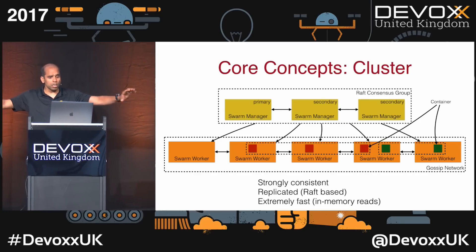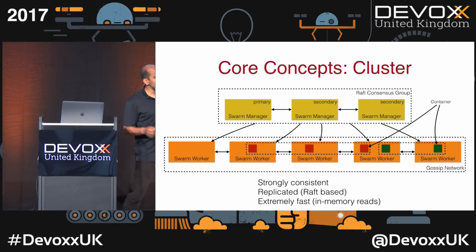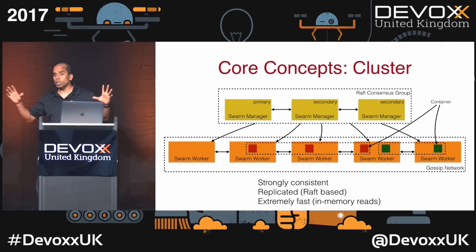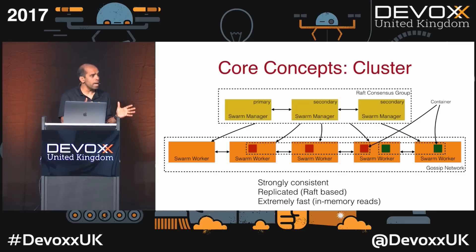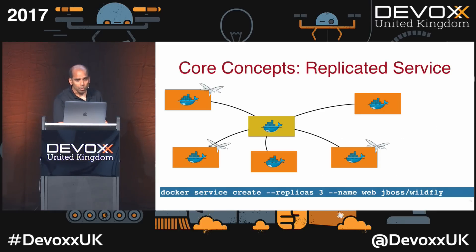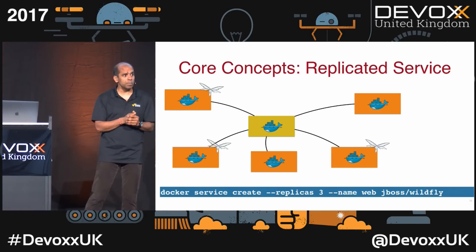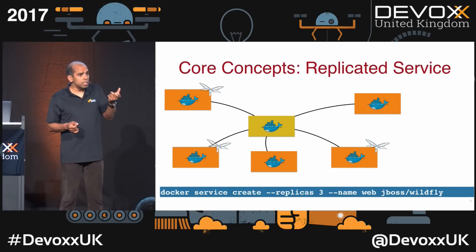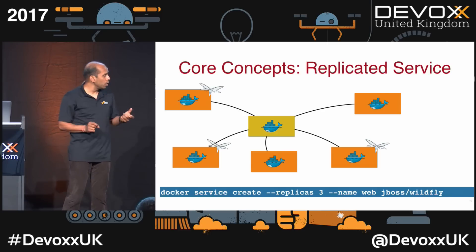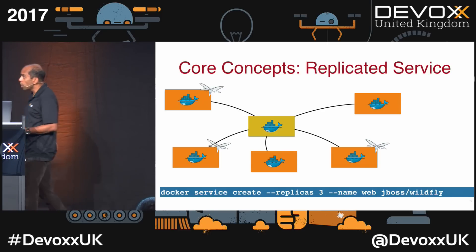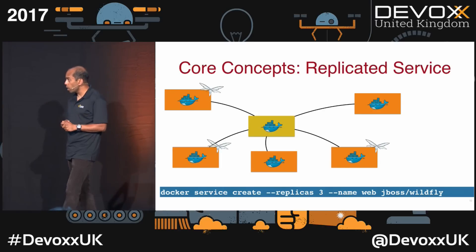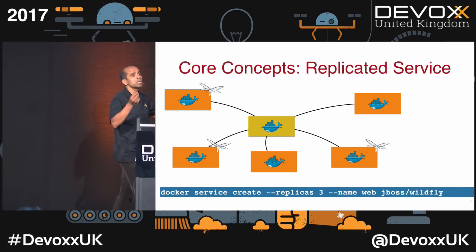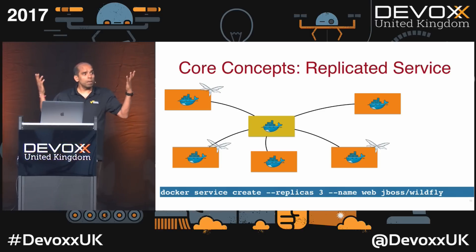Workers talk to each other using the Gossip Network. Service is a Docker concept where a service can have multiple tasks and each task is essentially a container. To fire up a service — for example a WildFly container — you run 'docker service create --replicas 3 --name web [image]'. This creates three replicas, downloading the image on three hosts identified by the Docker Swarm and running the containers. There are ways to influence where containers run, but by default it works automatically.